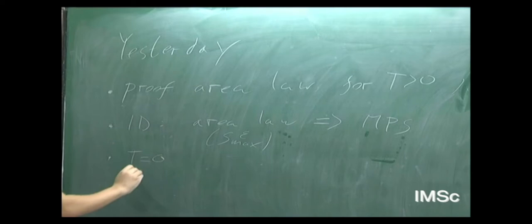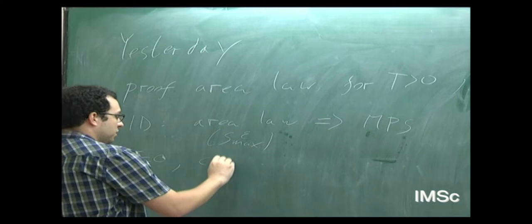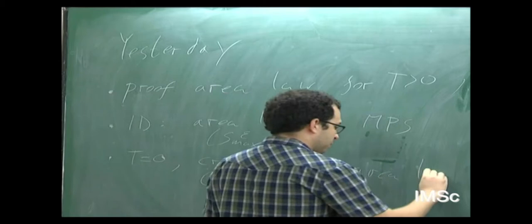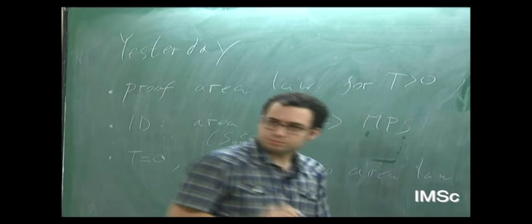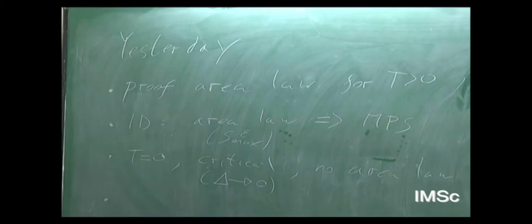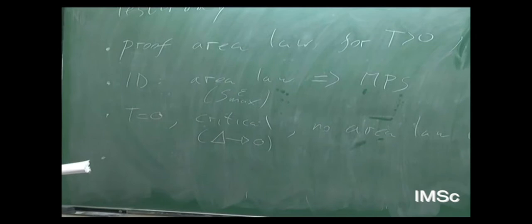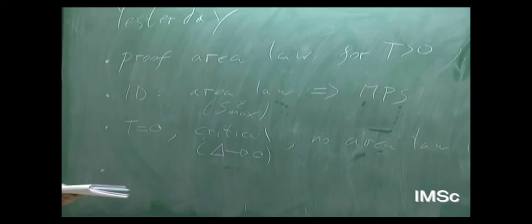Then we started analyzing the zero temperature case. The first thing I mentioned is that for critical models, when the gap closes, in general there is no area law. This is something people were perhaps not expecting, because if you look at models described by conformal field theory, you always have an area law with a log correction. But here there are models of volume law. So we need something more — perhaps a notion of correlation length or a gap.